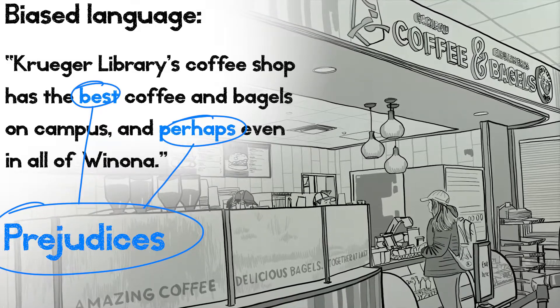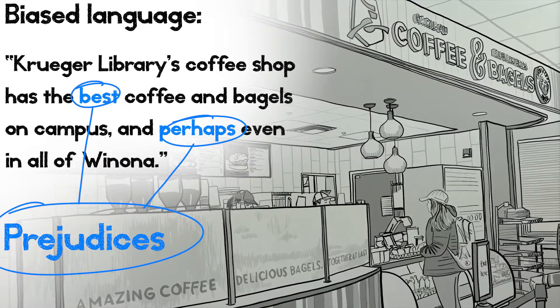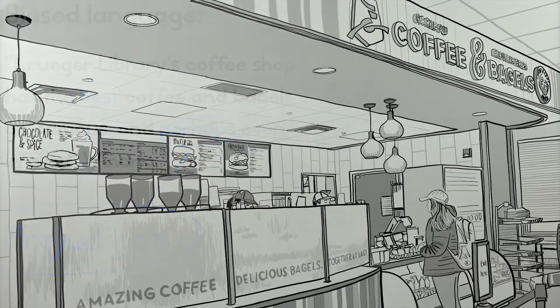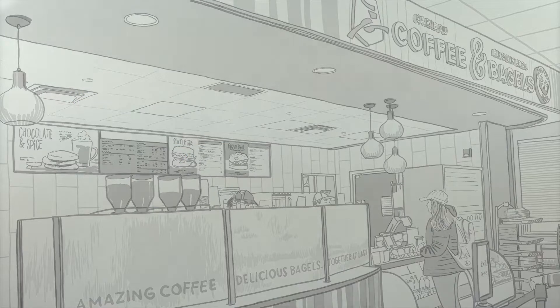That's not inherently bad, but if I'm writing something that's supposed to be serious research, it calls my objectivity into question. It can make me seem unreasonable, and although unreasonable people aren't necessarily wrong, they also aren't noted for their even-handed treatment of complex issues either. It's a red flag.